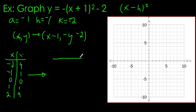I'll write my mapping rule and my new table. x minus 1, negative y, subtract 2. So I'm subtracting 1 from each of these values. Subtracting 1 from negative 2 is negative 3, negative 2, negative 1, 0, 1.